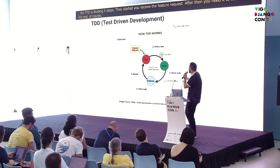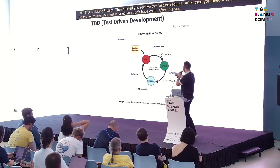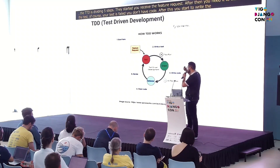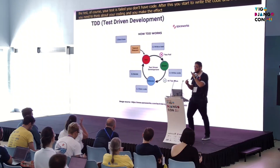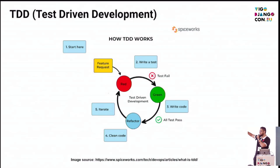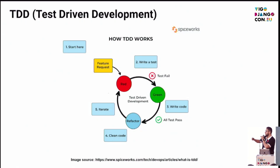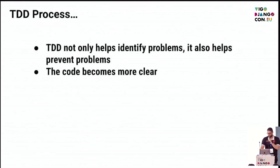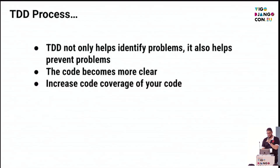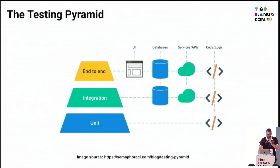Of course, your test fails because you don't have code yet. After this, you start writing the code. The fourth step — you need to think about your code and make a refactor, split big methods, clean code. The interaction needs to follow this step by step. At the fifth step, you need to think: am I continuing or not? The TDD process not only helps identify problems — it also helps prevent them. The code becomes more clear, and you increase the code coverage of your code and the project, because you start creating tests.